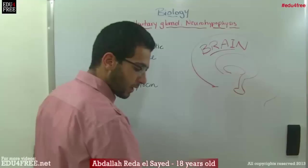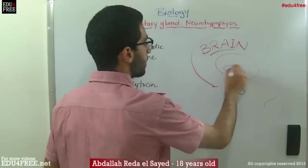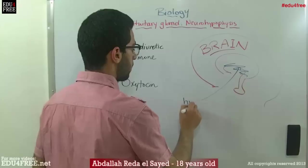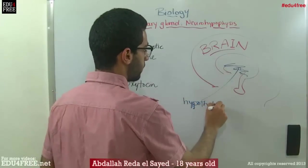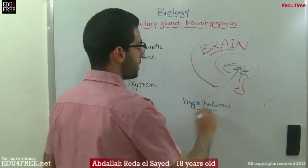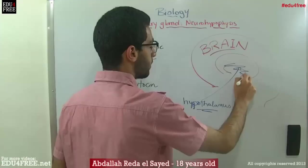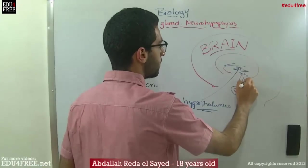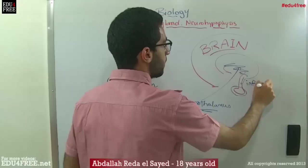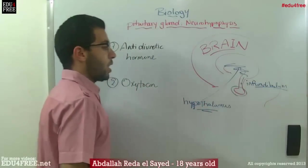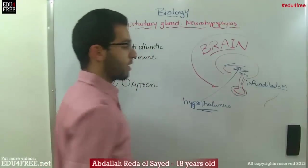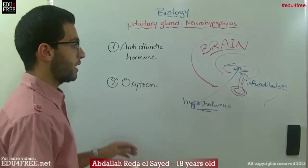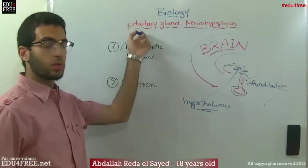This area here is called the hypothalamus. So they are secreted from this region and then they pass through this piece which connects between the hypothalamus and the pituitary gland. This is called the infundibulum. So it goes to the posterior region of the pituitary gland which is the neurohypophysis, and then it goes directly into the bloodstream, because we know that the pituitary gland is an endocrine gland.